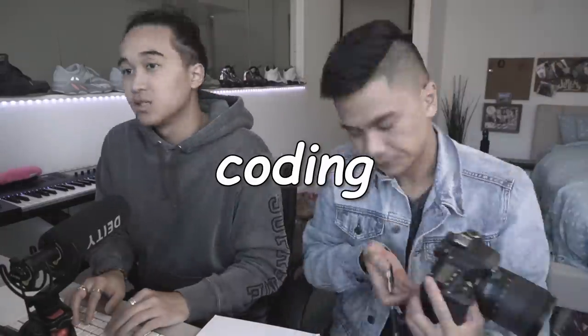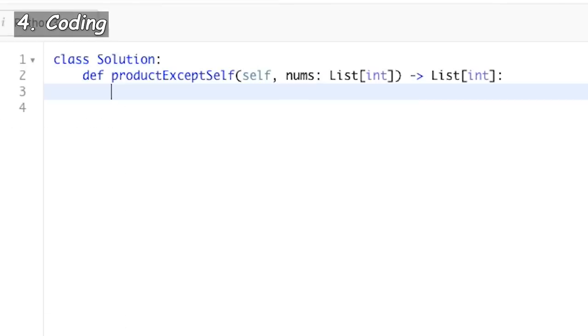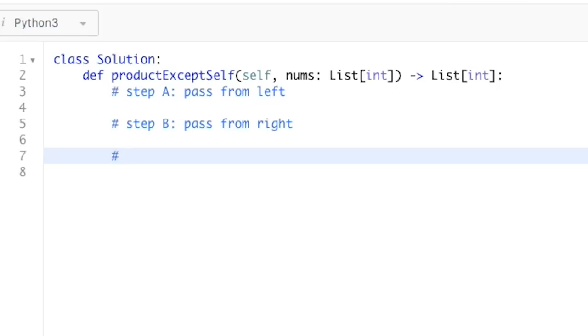So as you can see, we already solved most of the problem, or we actually solved the entire problem on paper, right? So the coding part should be the relatively easy part. So let's start off with step A. So I'm just going to, the way I like to do it, obviously talk it out, but I like to just leave comments just so people know exactly what I'm doing. So we'll call this step A. This is what we're going to do. Pass from left, or I think you wrote from left, right? So do pass from left. Then we'll do step B, pass from right. And then step C, we'll do A times B. All right. Cool.